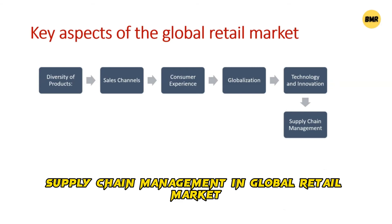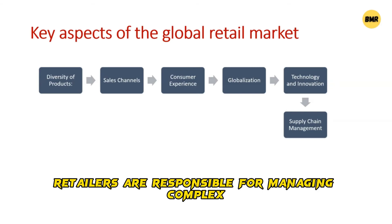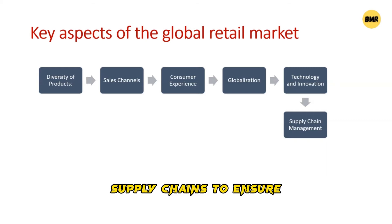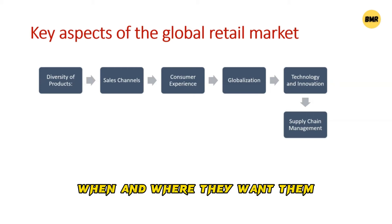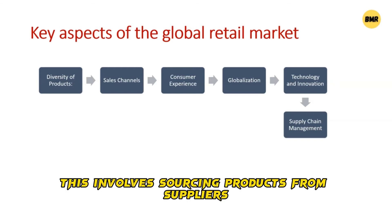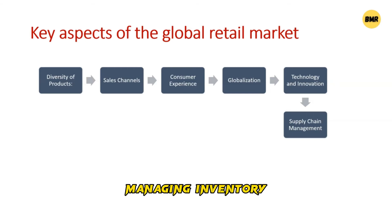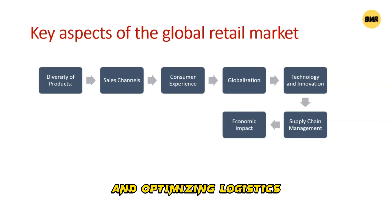6. Supply Chain Management in Global Retail Market — Retailers are responsible for managing complex supply chains to ensure products are available to consumers when and where they want them. This involves sourcing products from suppliers, managing inventory and optimizing logistics.